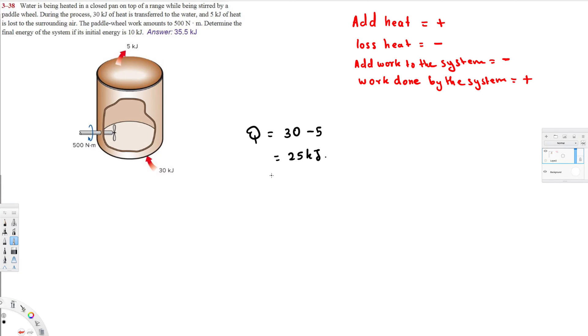Work done to the system, that's negative. Added work to the system is negative. So W is going to be negative, this is 500 Newton-meters. Newton-meter is equal to Joule, so we're dealing with kilojoules, so we have to convert this one.